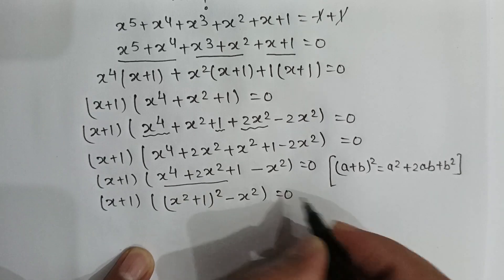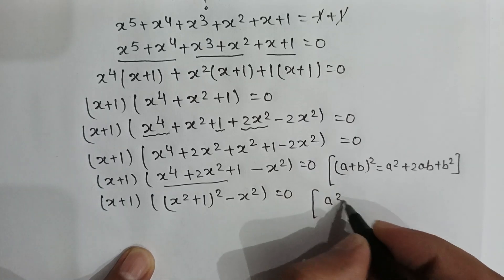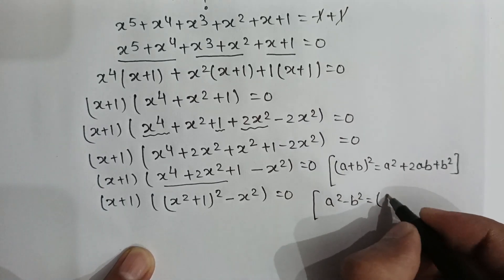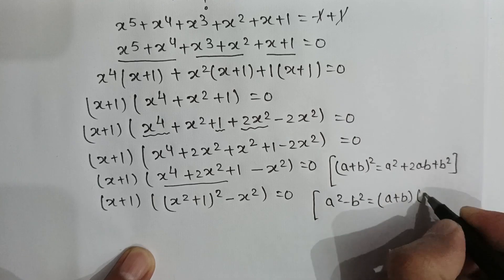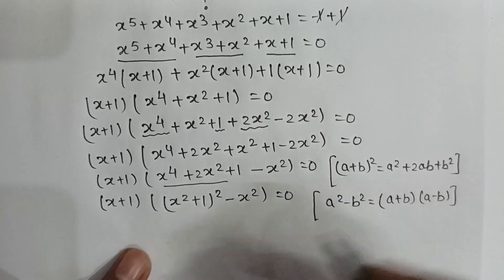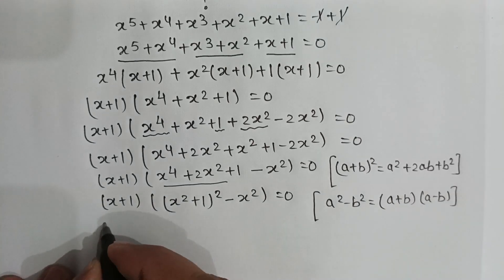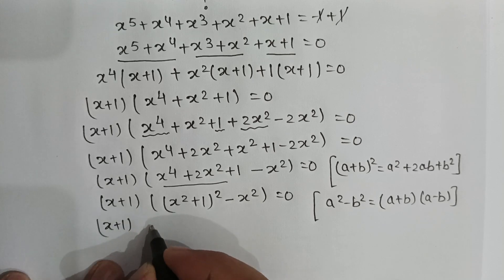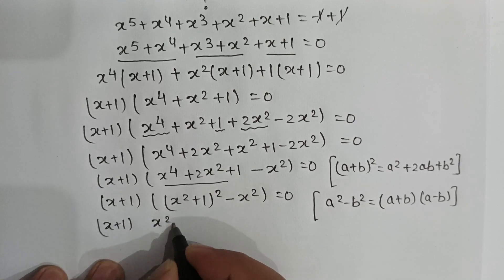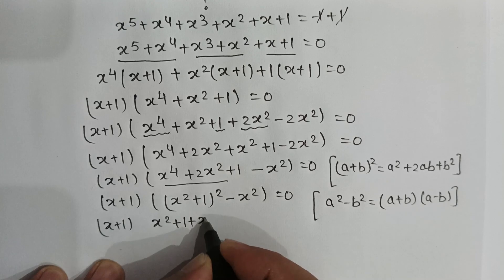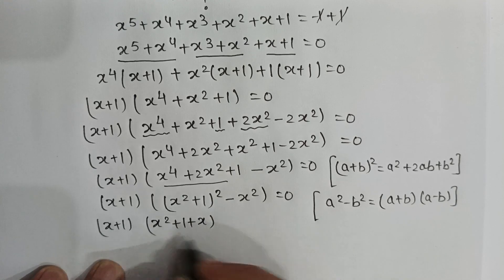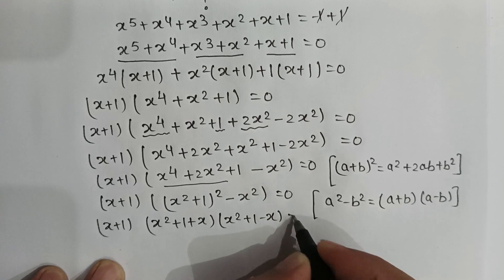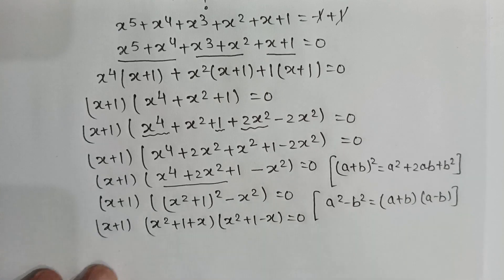As we know that a squared minus b squared can be written as (a plus b)(a minus b). So it will be (x plus 1) multiplied by (x squared plus 1 plus x) and (x squared plus 1 minus x) is equal to 0.